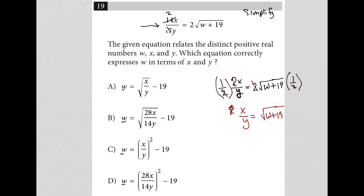Next, in order to get w isolated, I need to square both sides here to get rid of the radical. So I'd be left with x over y squared is equal to w plus 19. The square and the radical cross out.